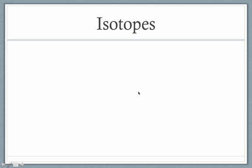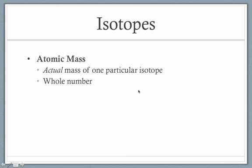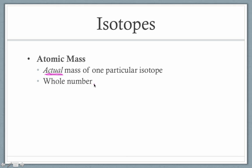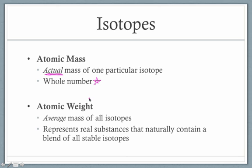Let's recap what we've talked about so far. Atomic mass is the actual mass of a particular isotope — it represents one atom and is always a whole number. Our new term, atomic weight, represents an average mass of all those individual isotopes. This average mass is important because real substances contain a natural blend of all stable isotopes, so we want our reported mass to represent all of those isotopes simultaneously — hence, we use an average.